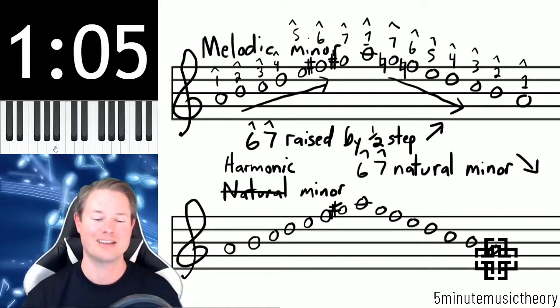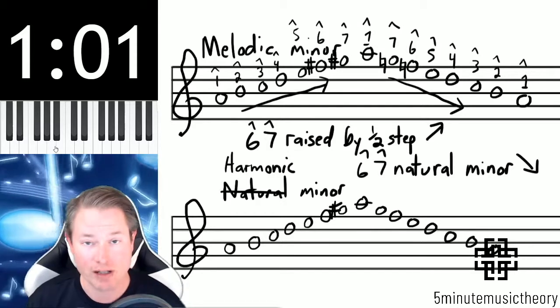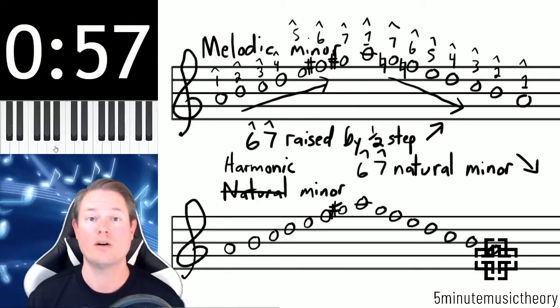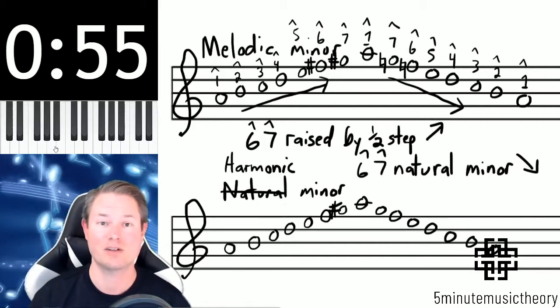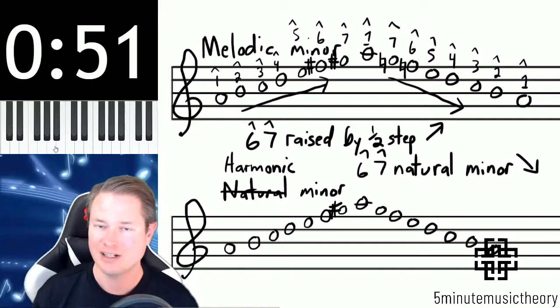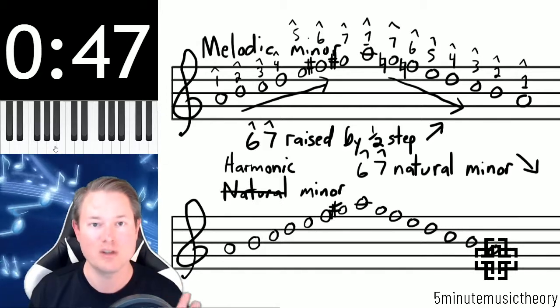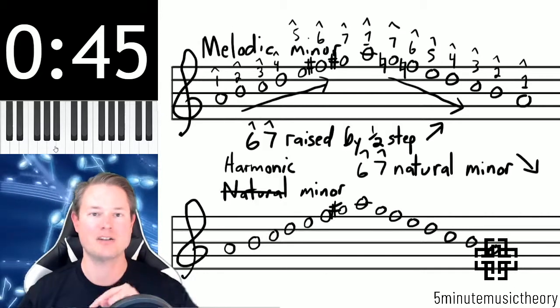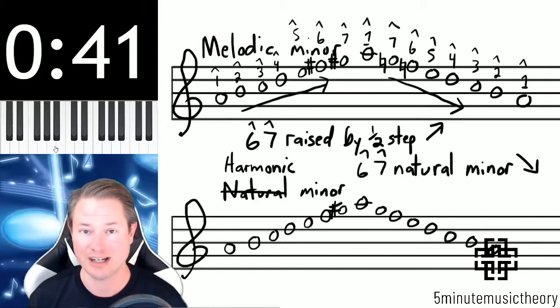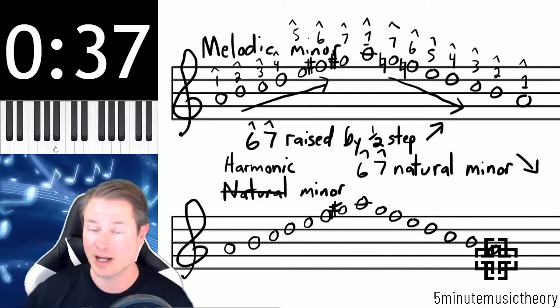So melodic minor, just to summarize very quickly, is different on the way up than it is on the way down. So when going up, you take the sixth and seventh scale degrees, you bump them up by a half step. Again, that doesn't always mean sharp; it just means that we're raising them by a half step, whichever accidental is appropriate to do that. And then on the way back down, you return them to their natural positions to create a natural minor scale on the way down. This is the only scale that we're going to run across that's different on the way up than it is on the way down.